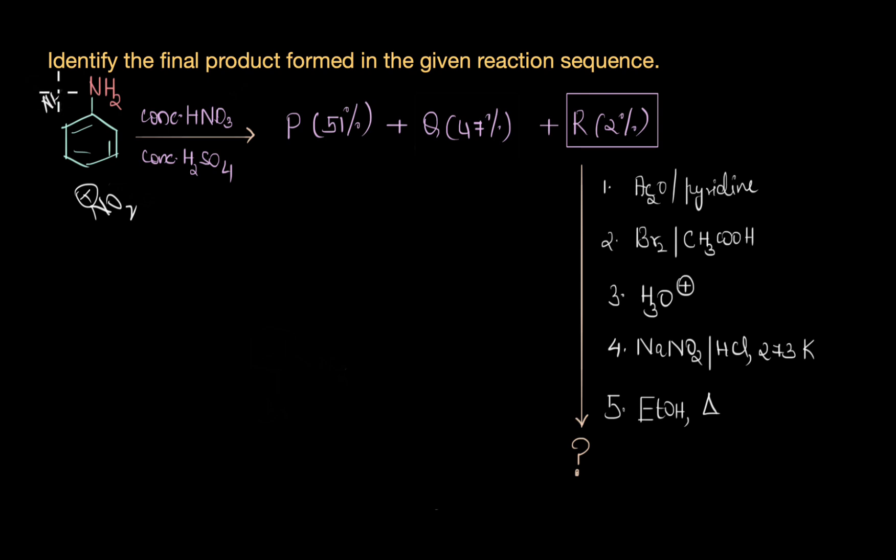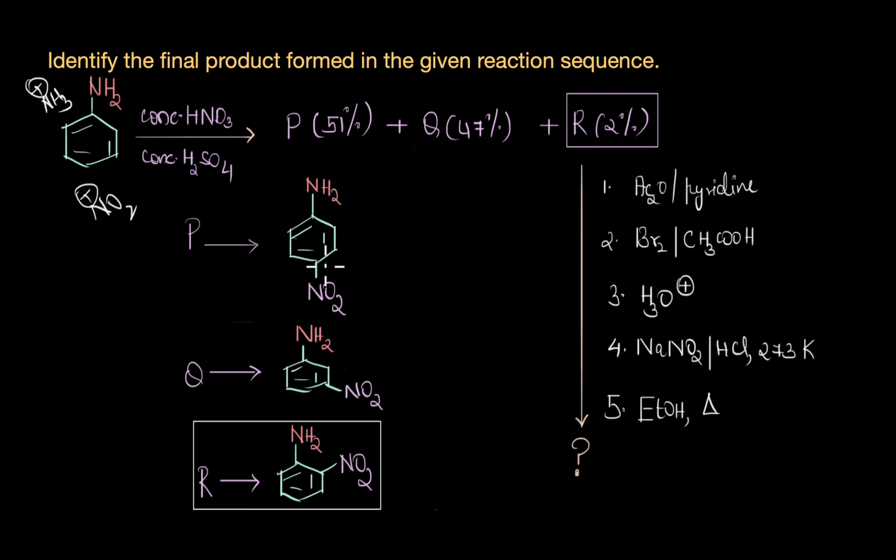But in addition to that, we get a substantial amount of meta product, and that's because here we are subjecting aniline to an extremely acidic reaction condition, concentrated HNO3 and concentrated H2SO4. Because of this, NH2 ends up getting protonated, so we get NH3 plus here. This NH3 plus is a strong deactivating group. It will direct the incoming electrophile NO2 plus to the meta position, and that is why we end up getting a substantial amount of meta isomer as well. So let's look at the products that are formed here. P is the para isomer, para-nitroaniline. Q is meta-nitroaniline, and R is ortho-nitroaniline. You can see that the major product still is the para isomer, but we have almost 47 percent of meta isomer formed.